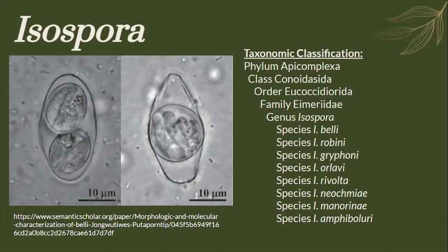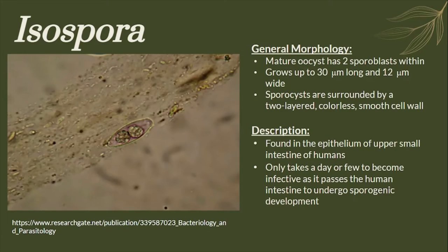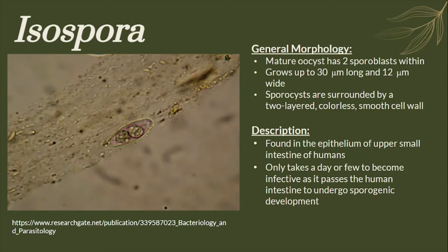Here is the taxonomic classification for the genus Isospora. The genus Isospora's oocyst has two sporoblasts, and it can grow up to 30 micrometers long and 12 micrometers wide. The sporocysts are surrounded by a two-layered colorless smooth cell wall. Isospora can be commonly found in the epithelium of the upper small intestine of humans, and it only takes a day or a few to become infective as it passes through the human intestine to undergo sporogenic development.